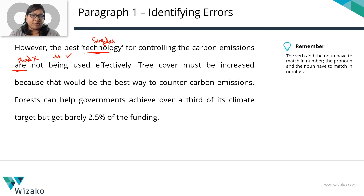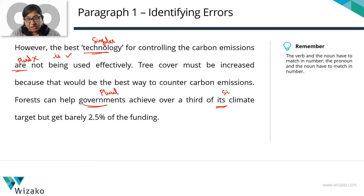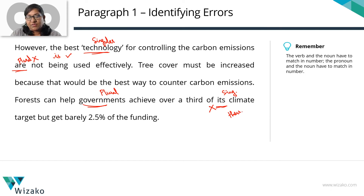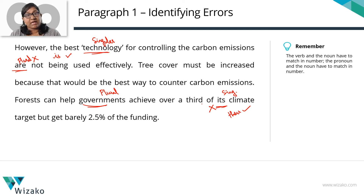Continuing: 'Tree cover must be increased because that would be the best way to counter carbon emissions. Forests can help governments achieve over a third of each climate target.' Whose climate target are we talking about? Governments. Is 'governments' singular or plural? Plural. Is 'each' singular or plural? Singular. So you don't have noun-pronoun agreement here — this is also incorrect. The right construction would be 'their climate target,' because governments is a plural noun. So we've seen one example of noun-verb agreement and one of noun-pronoun agreement — both errors in the paragraph.